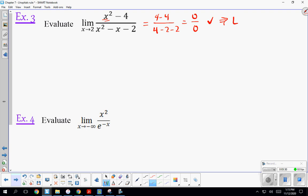Let's go ahead and find the derivative of the top and the derivative of the bottom, and then we'll try direct substitution again. We have 2x in the numerator, 2x minus 1 in the denominator. If I try direct substitution, I get 4 over 4 minus 1, which is 4 over 3.